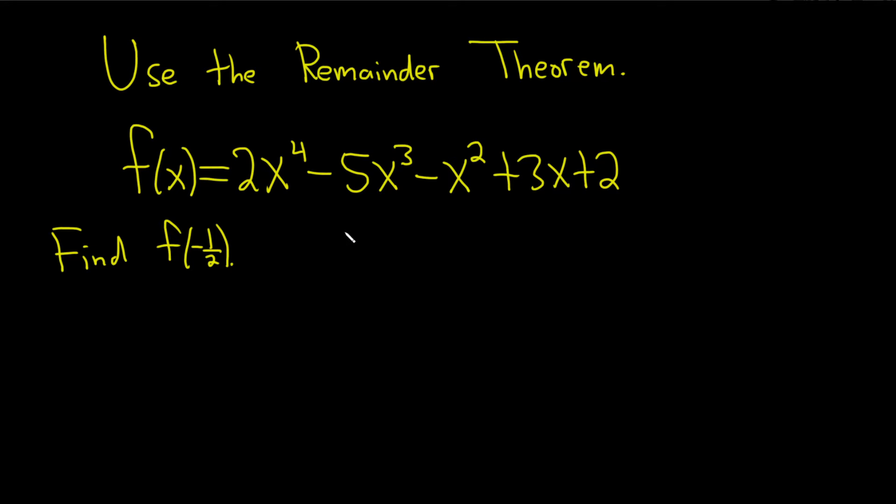In this question, we're being asked to use the remainder theorem to find f of negative 1 half. So in theory, you could take the negative 1 half and just plug it in here and get the answer. But in this question, we're being asked to use the remainder theorem, so let's go ahead and go through that process.